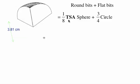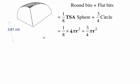So one eighth of the total surface area of a sphere, plus three quarters of a circle. The total surface area of a sphere is four pi r squared. So we have one eighth times four pi r squared, plus three quarters pi r squared.